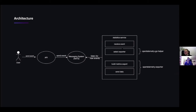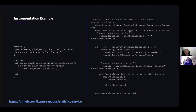The statistics service receives the event. It selects the exporter, which is achieved via the OpenTelemetry Go helper. Afterwards, it builds the metric export and sends the data, which is achieved via the OpenTelemetry exporter. So we needed to instrument the statistics service in a way that it can handle all of this.